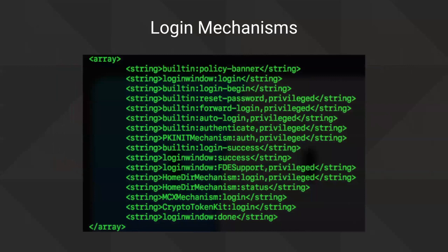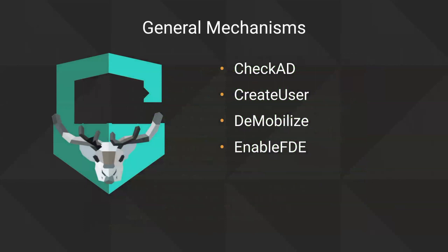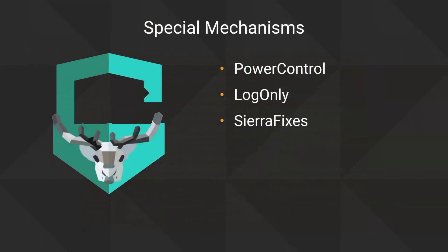There are a lot of login mechanisms that are part of the default operating system. All these different things have to agree to let a user log in. The only one we remove is the first 'login window login' mechanism — we take that out and insert our own mechanisms in its place. There are seven different mechanisms total in the Nomad Login AD package. The four that do the heavy lifting are Check AD, Create User, Demobilize, and Enable FDE. We also have three more specialist ones: Power Control, Log Only, and Sierra Fixes.